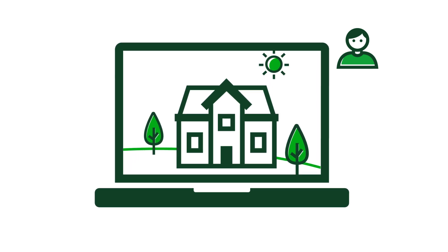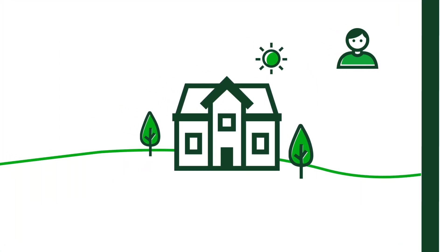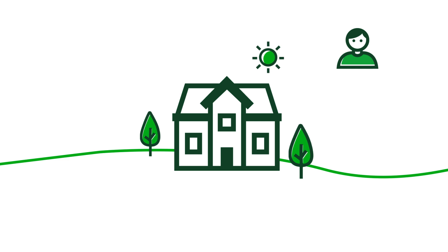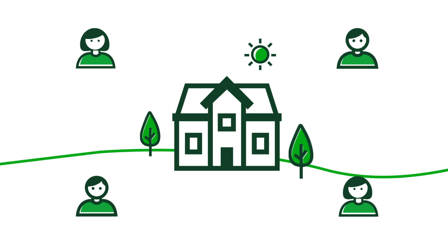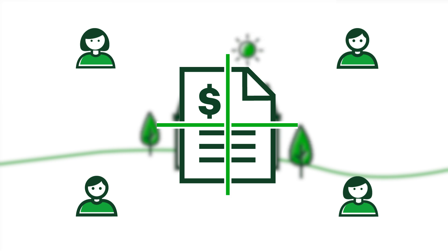Think of it like a group of people with a common interest who pool their money together to buy a portion of something that they can't or don't want to buy on their own. Let's say you wanted to rent a house for a summer vacation and found the perfect one online. However, the owner only rents it out per month and you only have one week of vacation, so you find three other people who want to rent the house for one week only and put your money together to rent the house for a month.